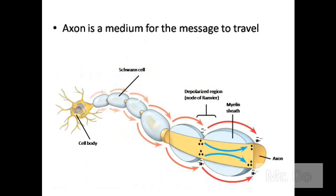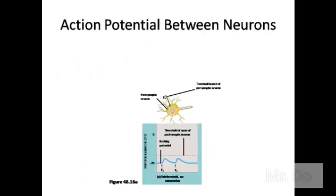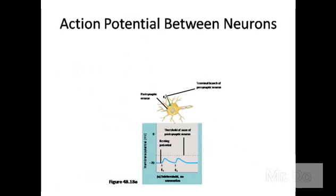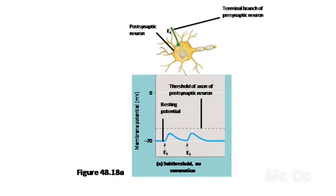Now we're going to zoom out and look at a bigger picture — the action potential between neurons. Here we have the axon terminal of one neuron connected to the dendrite of another. Basically, it's going to send an excitatory message called E1. This is trying to generate an action potential on the next neuron, and then it keeps repeating.